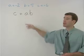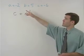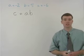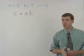In this problem, we're going to evaluate C plus AB, knowing that A equals negative 2, B equals 5, and C equals negative 6.